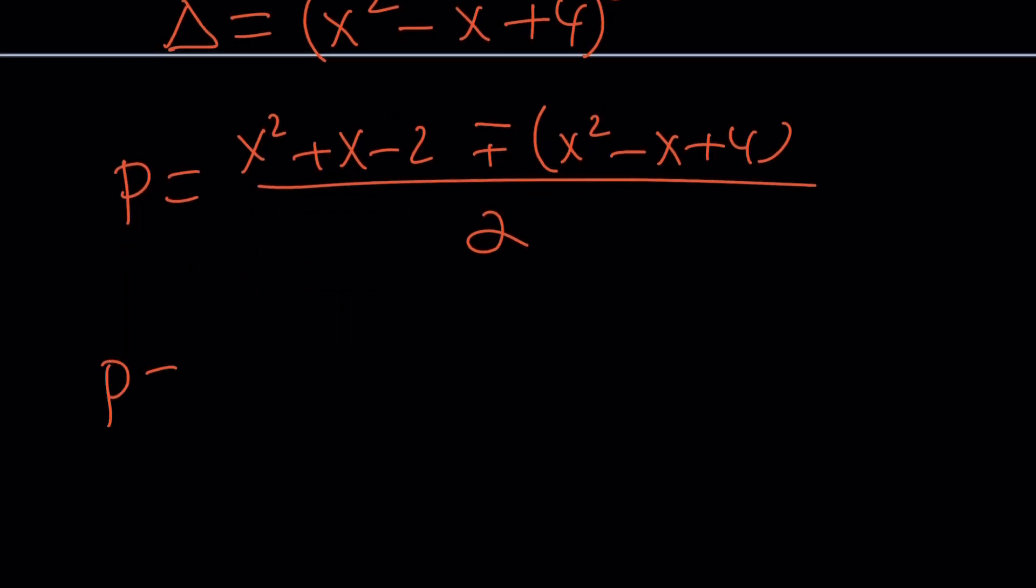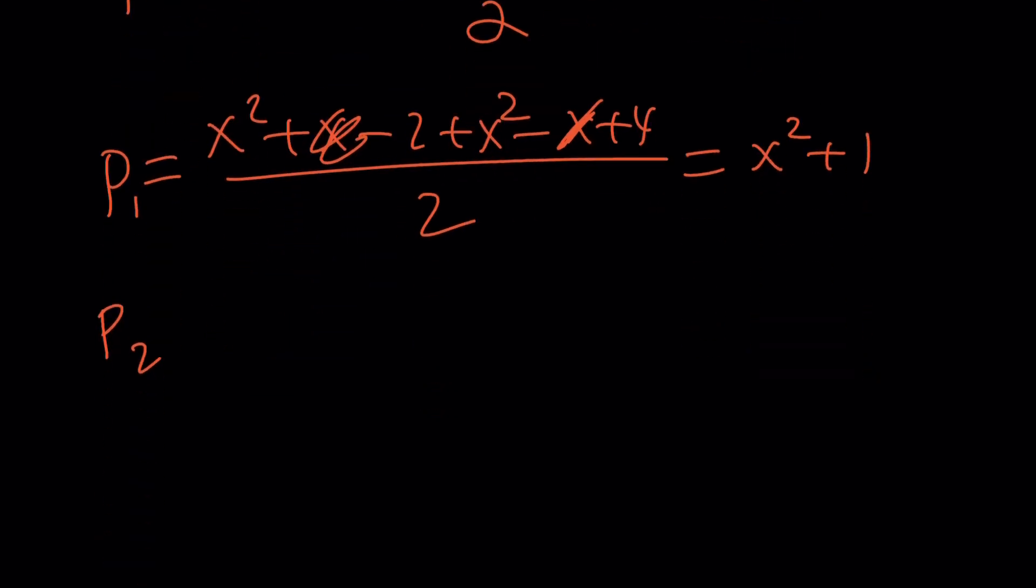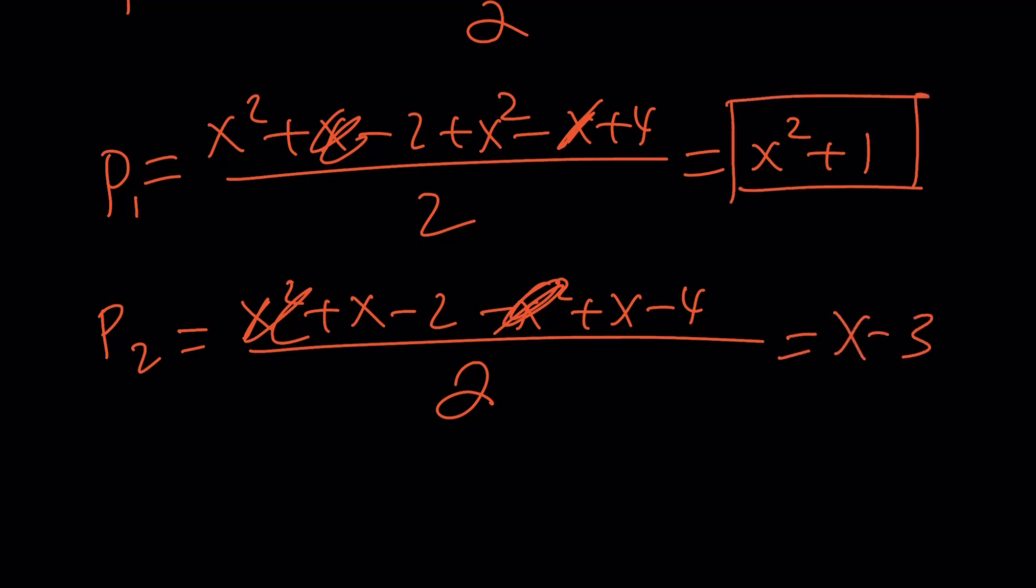Now let's go ahead and write each solution. The first solution is going to be when we add these up. x cancels out, 2x² + 2 divided by 2, that's going to be x² + 1. And the other P value - you can call these P₁ and P₂ - is x² + x - 2 minus x² + x - 4. We just subtract the whole thing. Here x² cancels out, we add x + x: 2x - 6, which is x - 3 when divided by 2. Make sense?